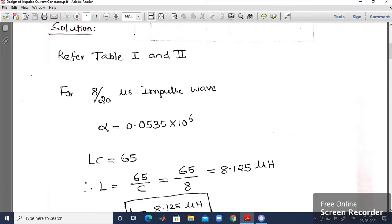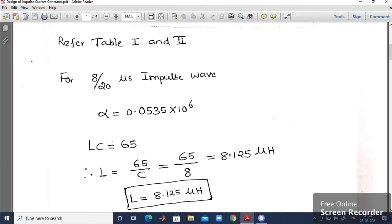So note down, this is the wavefront and wavetail of impulse waveform. Then alpha value can be noted down from the table 2. So alpha I have got 0.0535 × 10^6 corresponding to 8/20 microseconds. Now LC value is equal to 65. I will be getting from table 1.